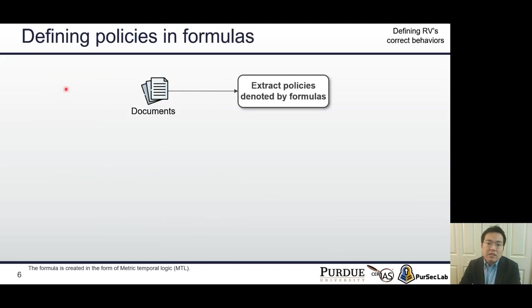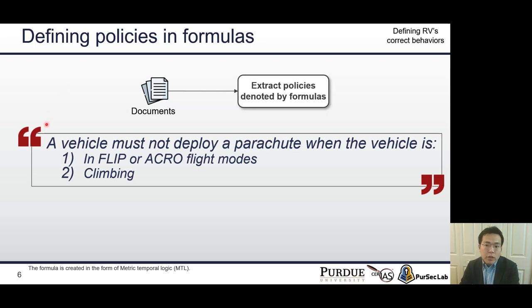The first step is defining the RVs correct behaviors as formulas. We extracted the RVs correct behaviors from documentation and comments in source code. For example, a documentation states three conditions to release a parachute.